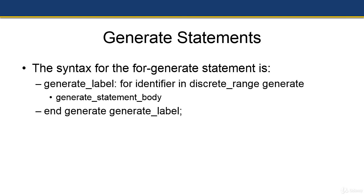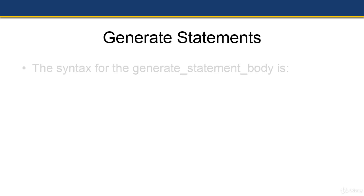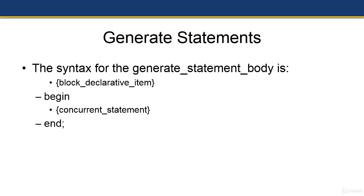Here's the syntax: generate_label: for identifier in discrete_range generate, and then within there the generate_statement_body, followed by end generate generate_label. The generate statement body consists of block declarative items, zero